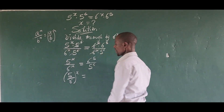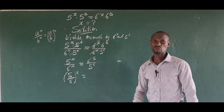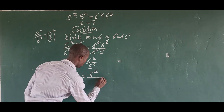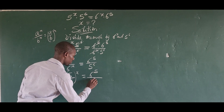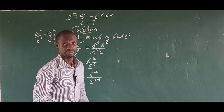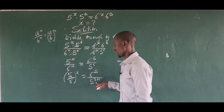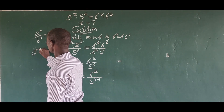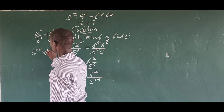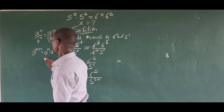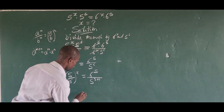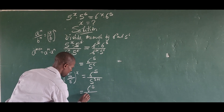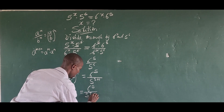On the right side, the smallest power is 5, and we have 6 in the numerator. We can rewrite the denominator: 5^6 = 5^(5+1). According to the law that a^(m+n) = a^m · a^n, this becomes 6^5 / (5^5 · 5^1).